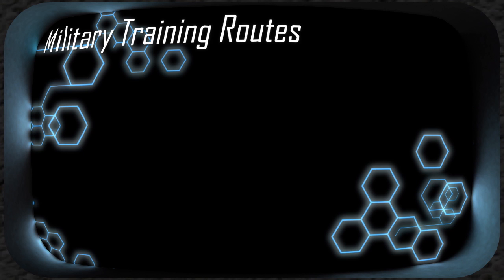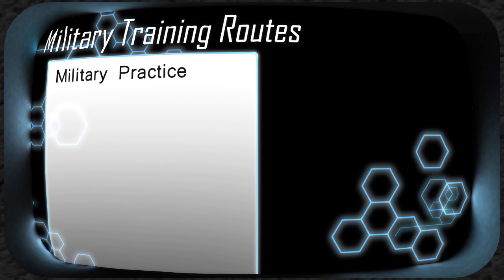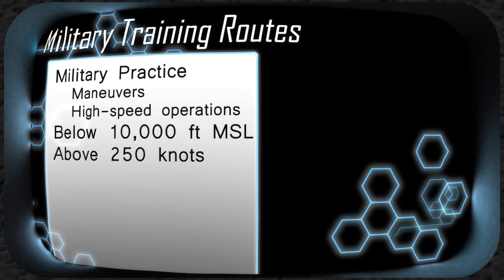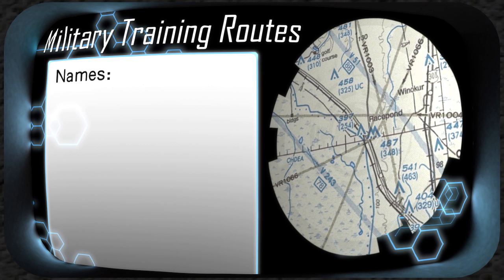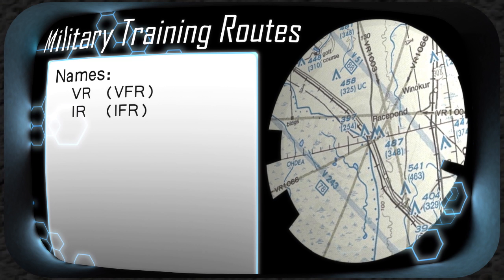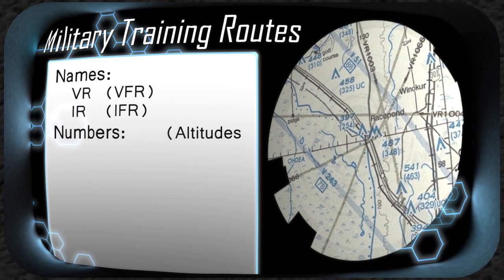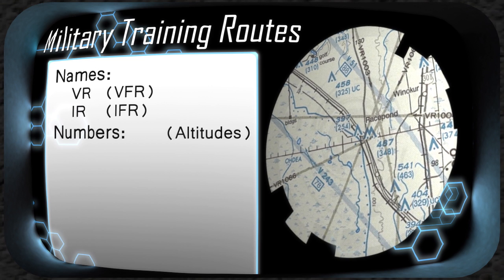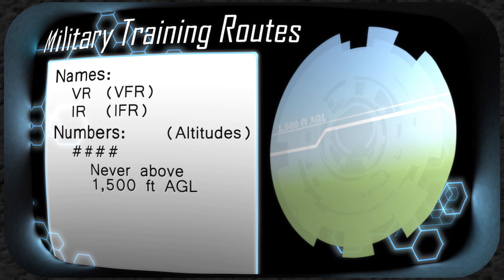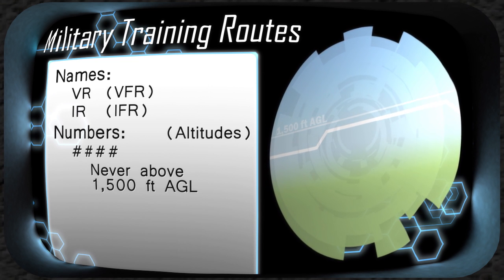Military Training Routes, or MTRs, are routes around the country where military aircraft practice maneuvers and high-speed operations, sometimes at very low levels. Generally, MTRs are established below 10,000 feet MSL, with aircraft operating at speeds in excess of 250 knots. On sectional charts, MTRs are depicted by gray shaded lines. The names of an MTR start with either VR or IR, which conveys whether the route is flown VFR or IFR. MTRs with no segment above 1,500 feet AGL shall be identified by four-number characters — for example, IR-1206 or VR-1207.